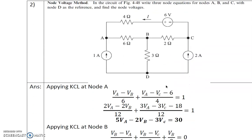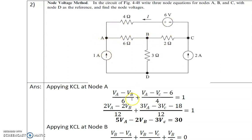Let's solve the second problem, which is based on the node voltage method. The network is given and we must write node equations at points VA, VB, and VC, taking point D as the reference — that is, D is at zero potential. Applying KCL at node A, we identify incoming and outgoing currents.